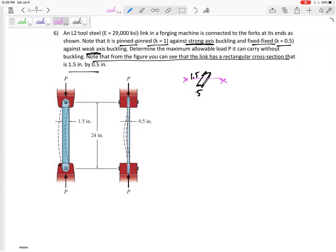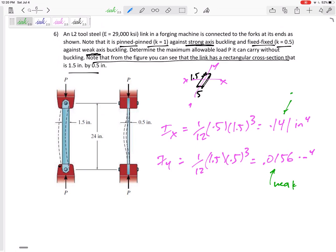My Ix would be 1/12 bh cubed, which is 0.141 inches to the 4th. My Iy is 1/12 hb cubed, 0.0156 inches to the 4th. So here is my weak axis, here is my strong axis.